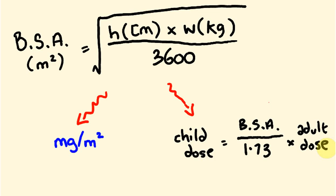We're going to be using these formulas in varying amounts across the examples. Sometimes you'll have to work out the body surface area yourself; sometimes the BSA will already be given and you'll need to apply the adult dose formula. It's really important that you remember these two formulas. Let's have a look at a few examples.